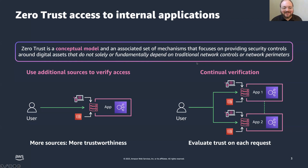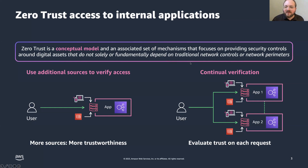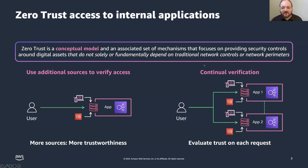In practice, you use additional sources to verify access, and then you have continual verification where each time a request is made to your application, you are verifying that that person or device has access and has the appropriate access to the application. When you remove this network perimeter, you eliminate that old VPN approach of saying everyone who has authenticated into my VPN has access to my applications. We move to a process where you evaluate each request.